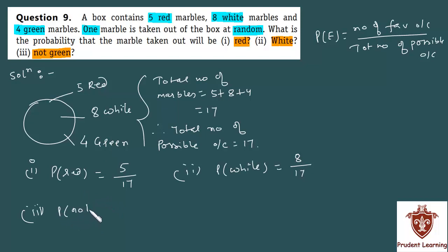Probability that the marble is not green. Now, one concept you should know. Any event's probability plus that event's non-probability, which we denote as E-bar, the sum is always 1.